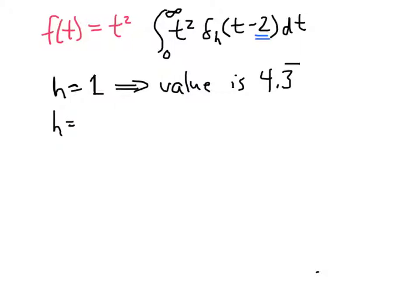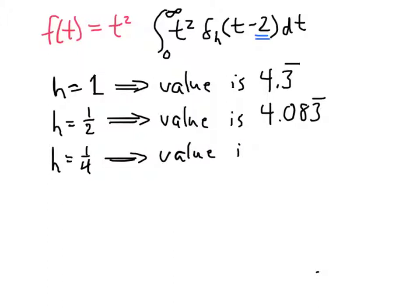When h is 1 half, which means our interval becomes narrower, the value is 4.083 repeating. And when h is 1 fourth, the value of the integral is 4.02083 repeating.